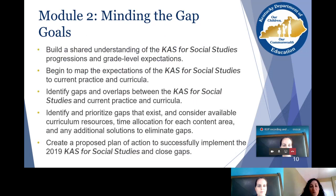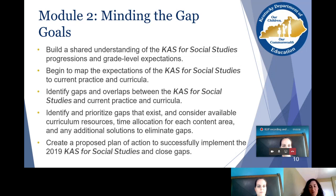The goals of the Minding the Gap module are to build a shared understanding of the KAS for Social Studies progressions and grade level expectations. It is recommended that this module follows Module 1, Getting to Know the KAS for Social Studies, because you need a good understanding of the document before evaluating your program. Additional goals include mapping the expectations of the KAS to current practice and curricula, identifying gaps and overlaps, identifying and prioritizing those gaps, considering available curriculum resources and time allocation, and creating a proposed plan of action to successfully implement the 2019 KAS for Social Studies and close gaps.